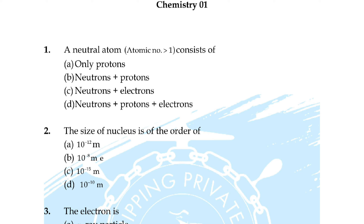Question number 29: as compared to potassium, sodium has — option A: lower electronegativity, option B: higher ionization potential, C: greater atomic radius, D: lower melting point. Correct answer is option B: higher ionization potential.